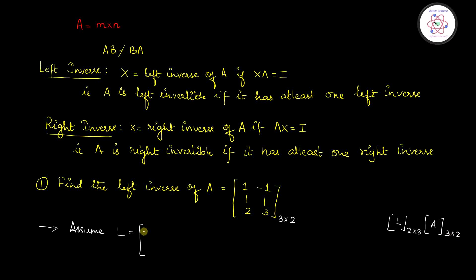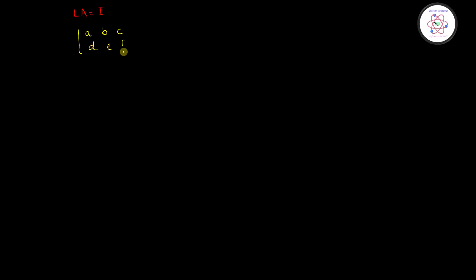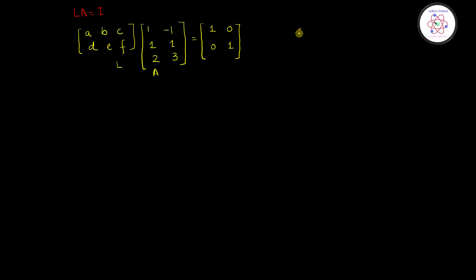So let me assume L equals [A, B, C; D, E, F], which is a 2 cross 3 matrix. Our condition to determine the left inverse is L into A equals I. So we multiply [A, B, C; D, E, F] with the matrix A = [1, -1; 1, 1; 2, 3], and this equals the identity matrix [1, 0; 0, 1]. L is a 2 cross 3 matrix multiplied with A which is a 3 cross 2 matrix, giving a 2 cross 2 identity matrix.